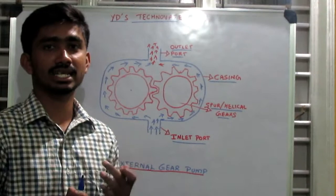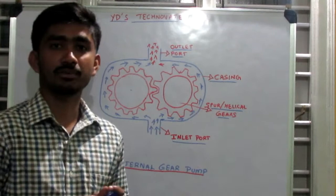So how does an external gear pump work? As the principle says, a partial vacuum has to be created.